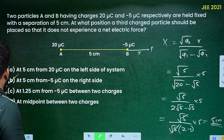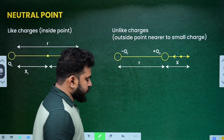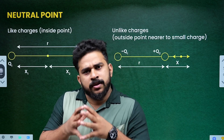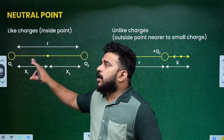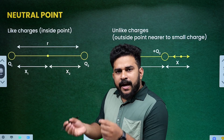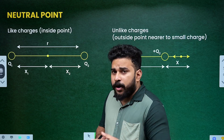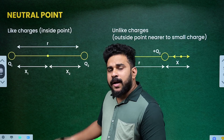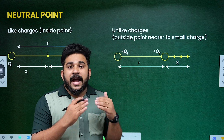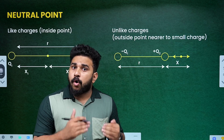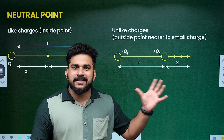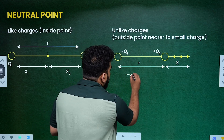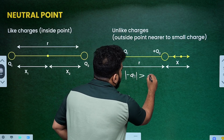This is the concept: electric field of two charges is zero at the neutral point. For unlike charges, the neutral point is in between. For like charges it is outside. The magnitude of the larger charge determines which side the point is on outside the system.